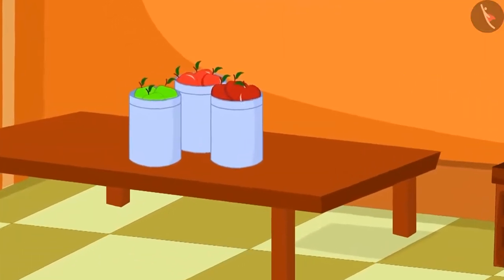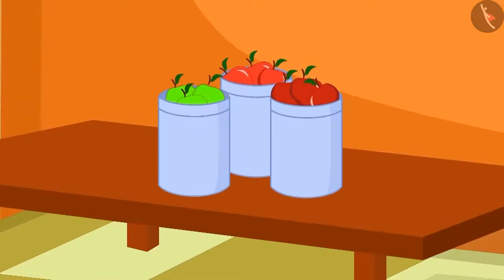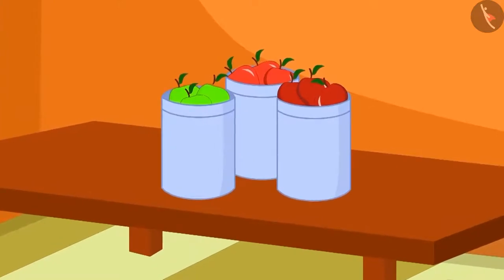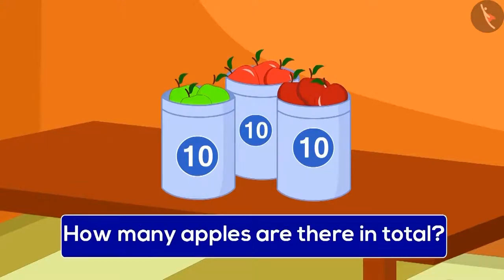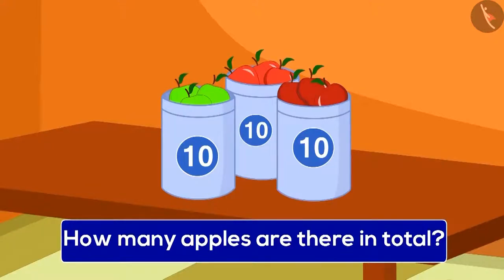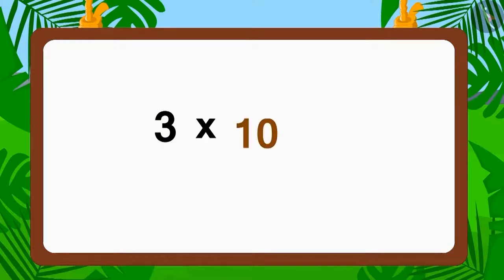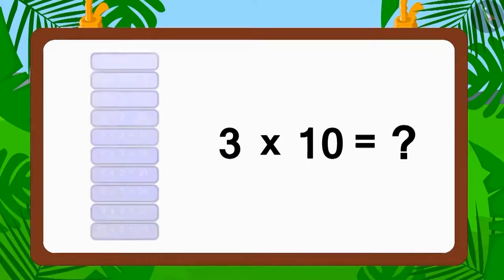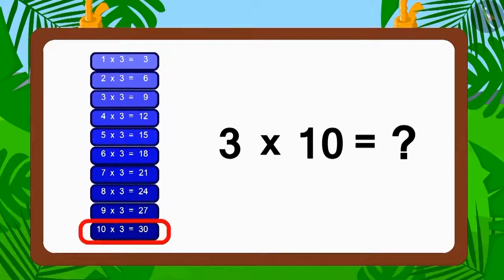As he walked in, he saw three boxes on the table, and in each box, there were ten apples. Can you tell how many apples were there in total? How will we write this by using multiplication? Three multiplied by ten. Now, using the multiplication of three, how many are these? Thirty.